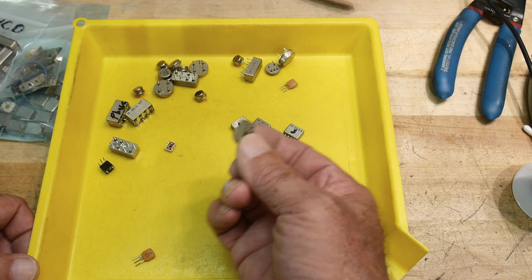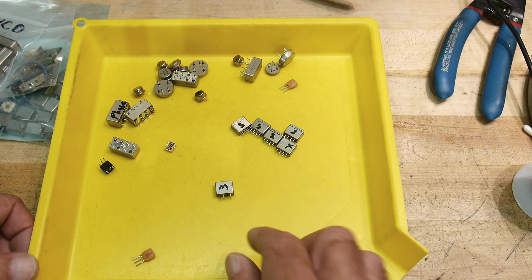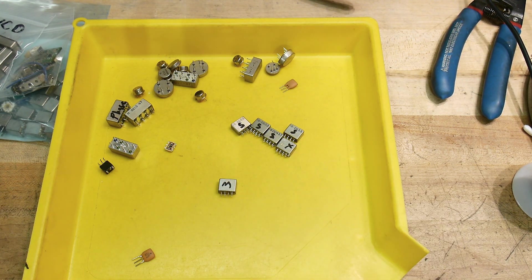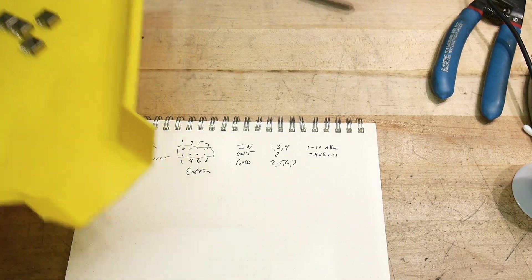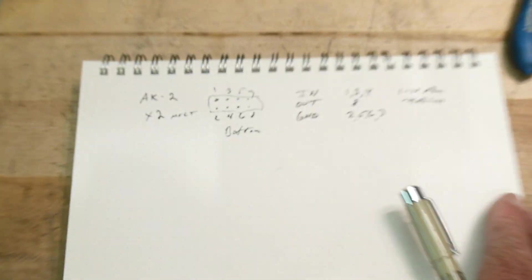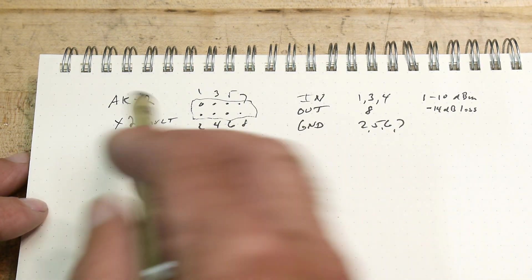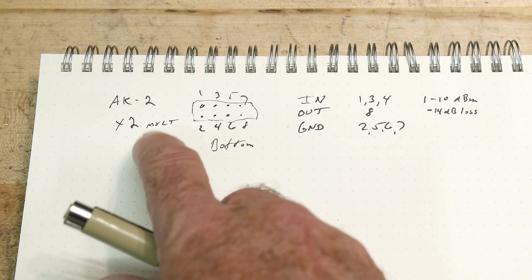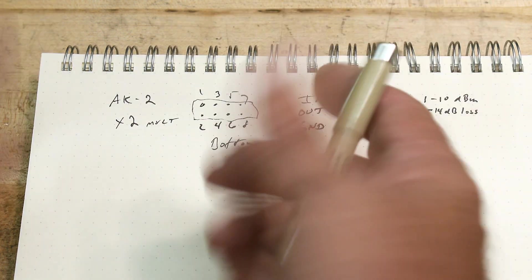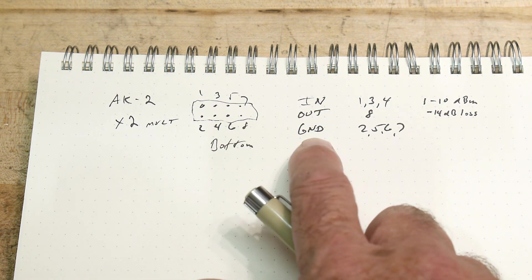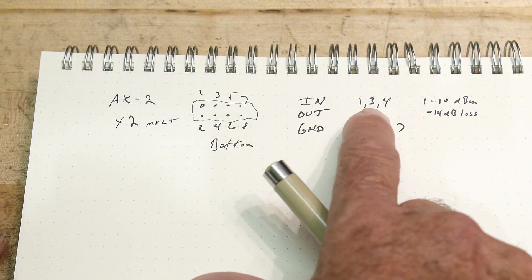All right, so what we're going to do is we're going to finally wire one of these up and try it out. Let me get paper here, where's my pen? All right, this one is a Mini Circuits AK-2, and it's a two times multiplier, so if you input 100 megahertz, 200 megahertz comes out, that kind of thing. And basically there's an in and out and a ground, and that's all you need to know.